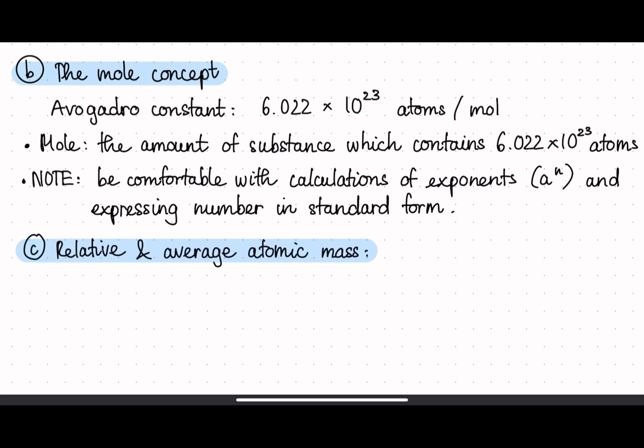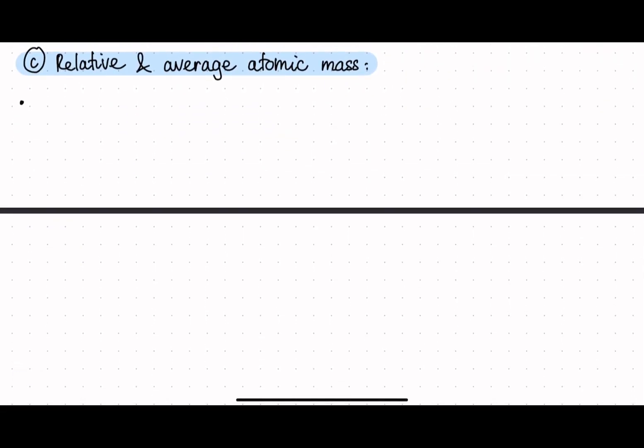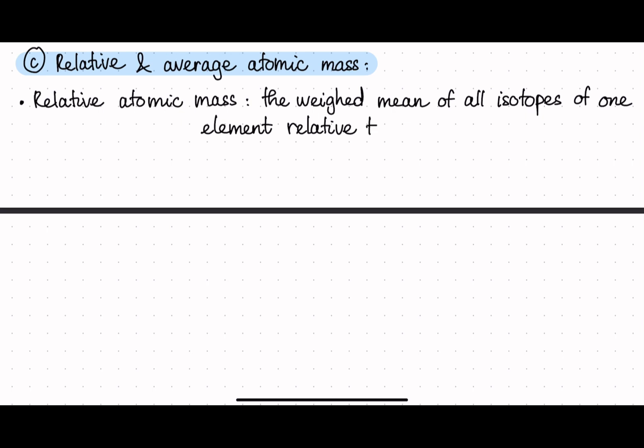And the third section in this subtopic is relative and average atomic mass. So the first definition we have is relative atomic mass. Why should we put a relative here? Relative means compared to something, right? So here relative atomic mass is the weighted mean of all isotopes of one element. And it is relative or compared to 1/12 of the mass of a C12 atom. And there is no unit for this relative atomic mass because we're comparing to something.